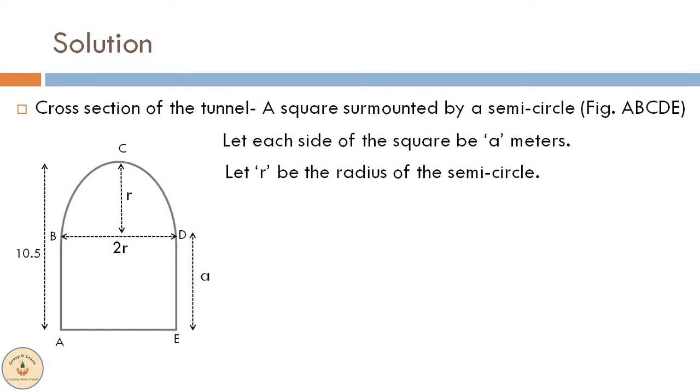It is given to us that the height of the tunnel is 10.5 meters. Thus from the figure we can say that a, the side of the square, plus r, the radius of the semicircle, equals 10.5 meters. Also for square ABDE, side a will be equal to 2r since the side of the square is equal to the diameter of the semicircle.